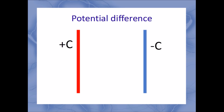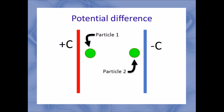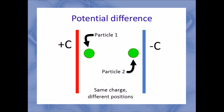Say the red one has a positive charge of one coulomb, and the blue one has a charge of negative one coulomb. The rods have exactly opposite charges, but let's say we're holding them very firmly so they can't move toward each other. Now we take two particles, one and two, and hold them between the rods. Particle one is next to the positive rod, particle two is chilling out by the negative rod. The particles both have the same charge, so they are identical — the only difference here is their position.